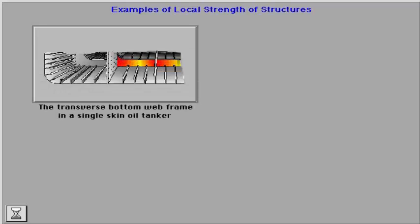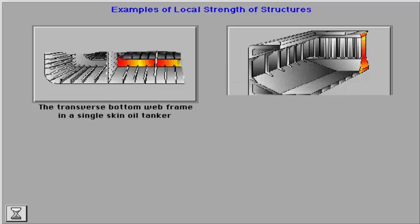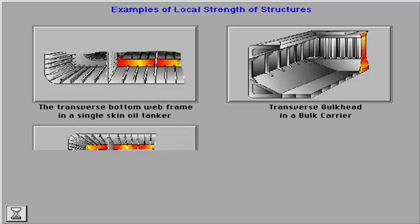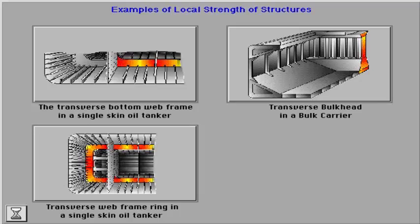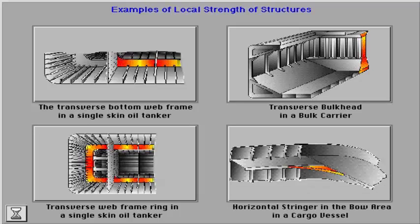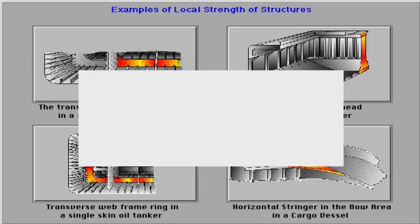We will now show some examples of local strengths of structures: the transverse bottom web frame in a single skin oil tanker, a transverse bulkhead in a bulk carrier, a transverse web frame ring in a single skin oil tanker, and a horizontal stringer.